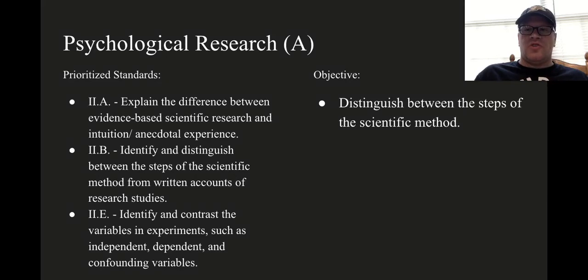All right, this is Psychological Research, Section A Lecture. Our prioritized standards are going to be 2A, 2B, and 2E. Objectively, we're going to distinguish between the steps of the scientific method.